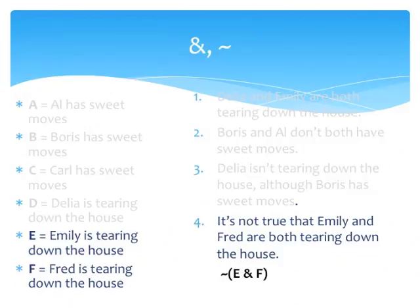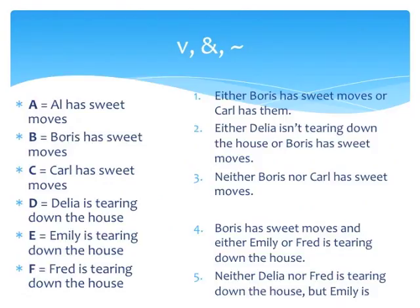Sentence 4 is simply the negation of the sentence 'Emily and Fred are both tearing down the house.' Now let's complicate things by translating sentences containing conjunction, negation, and disjunction.